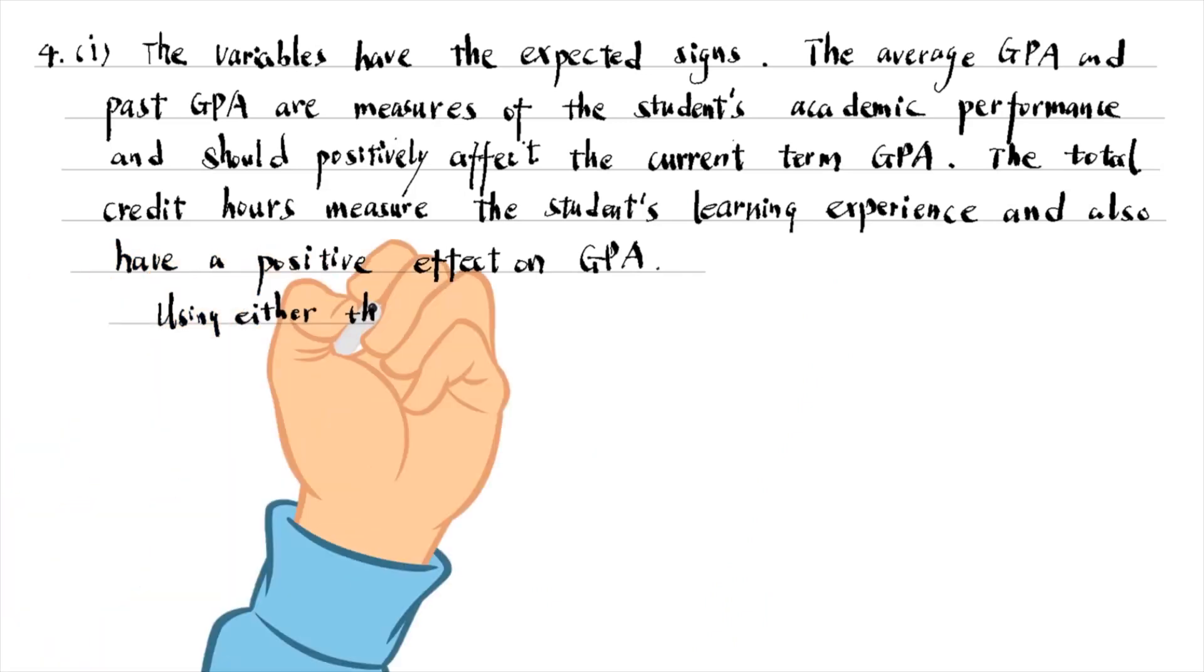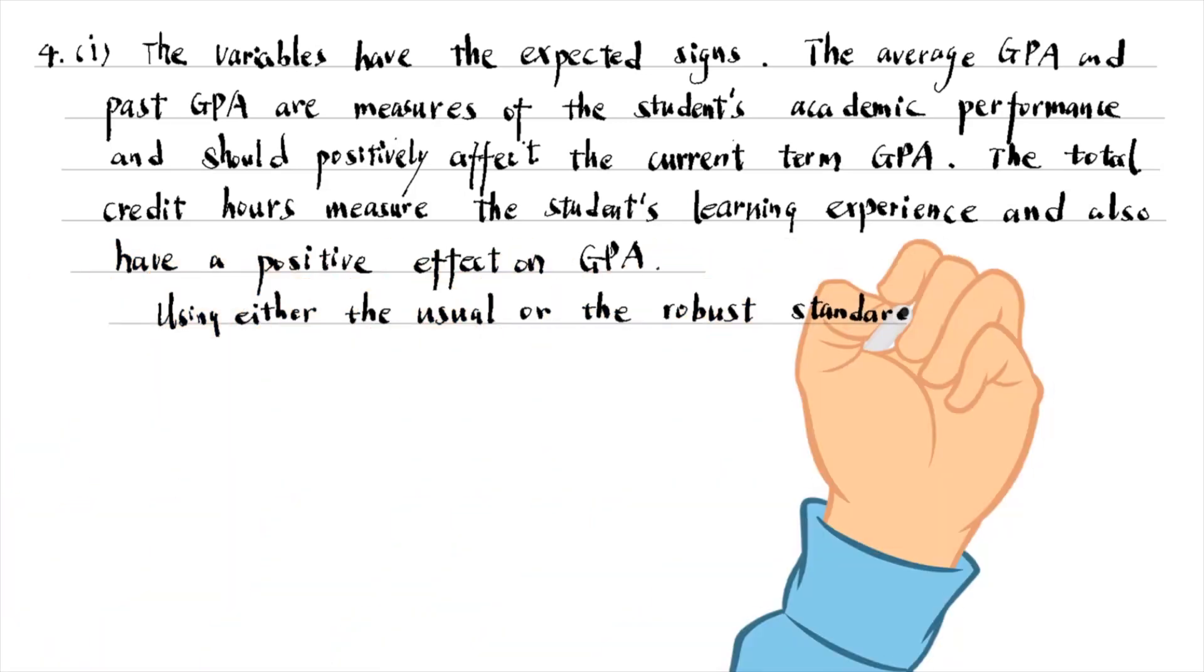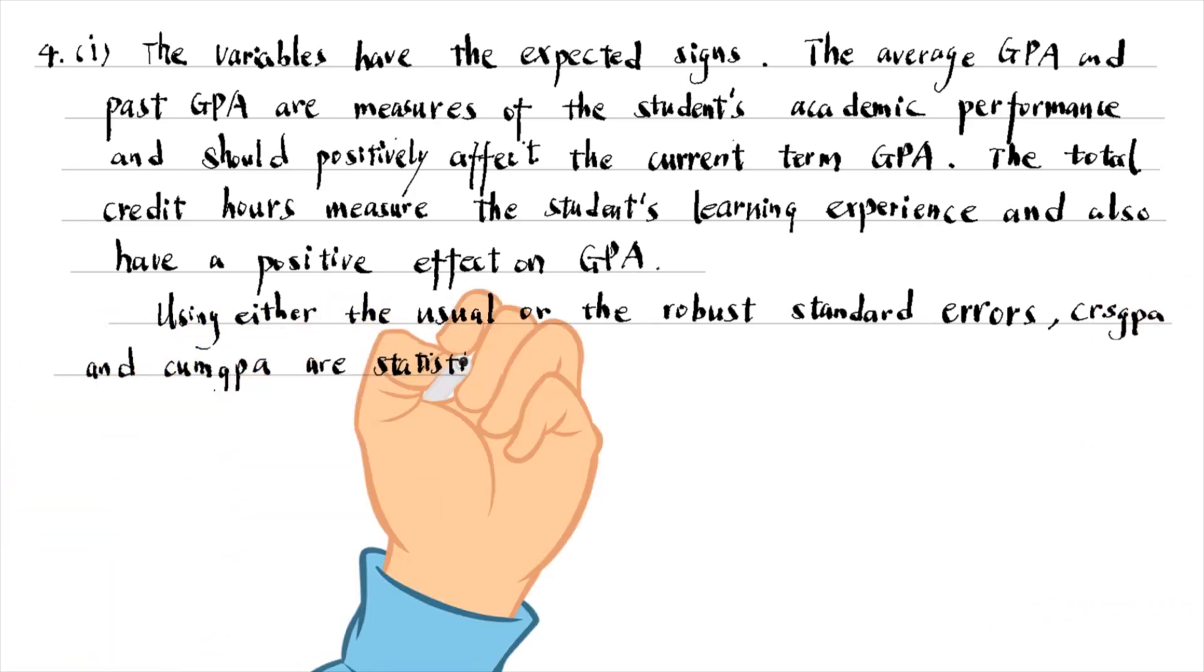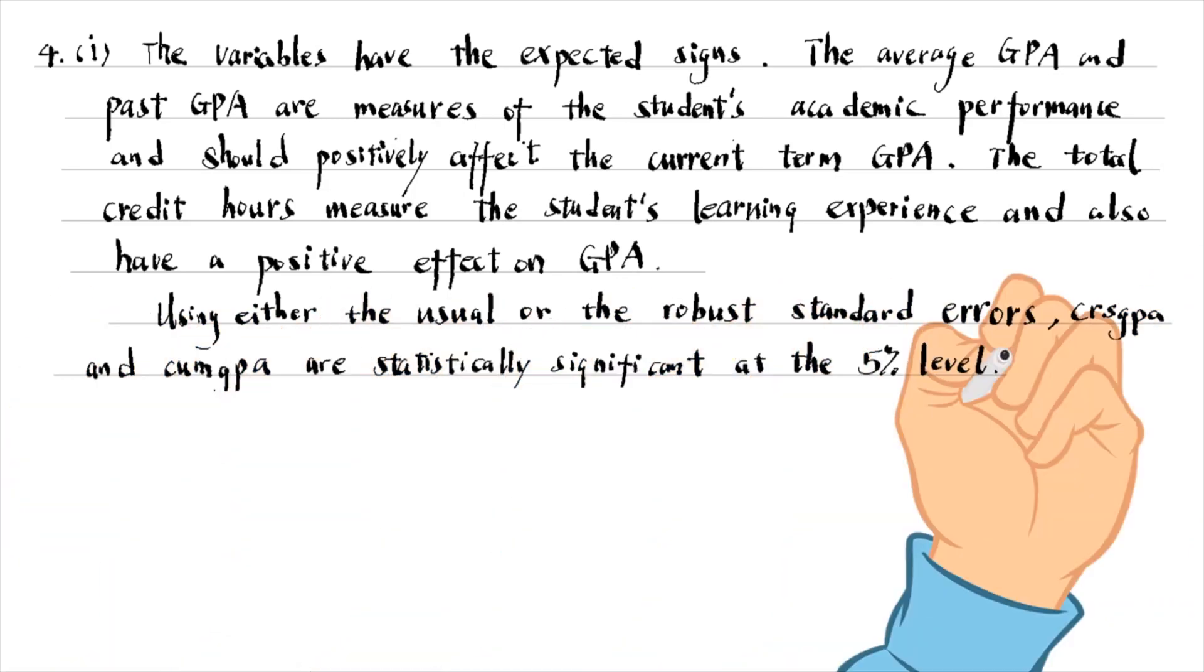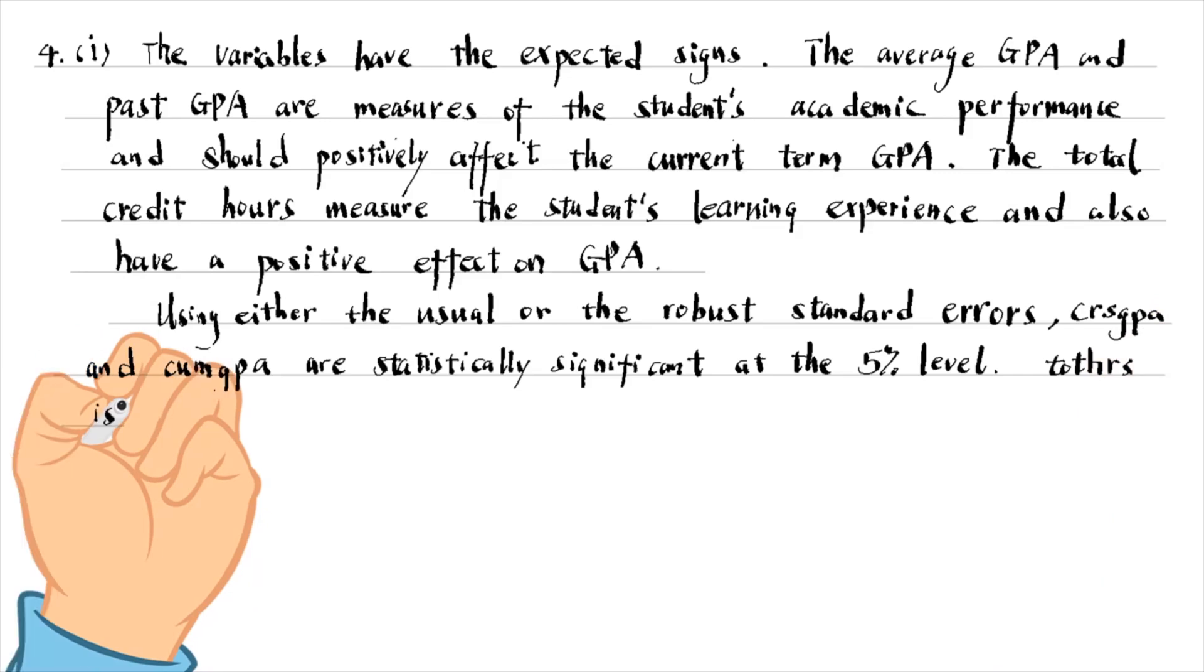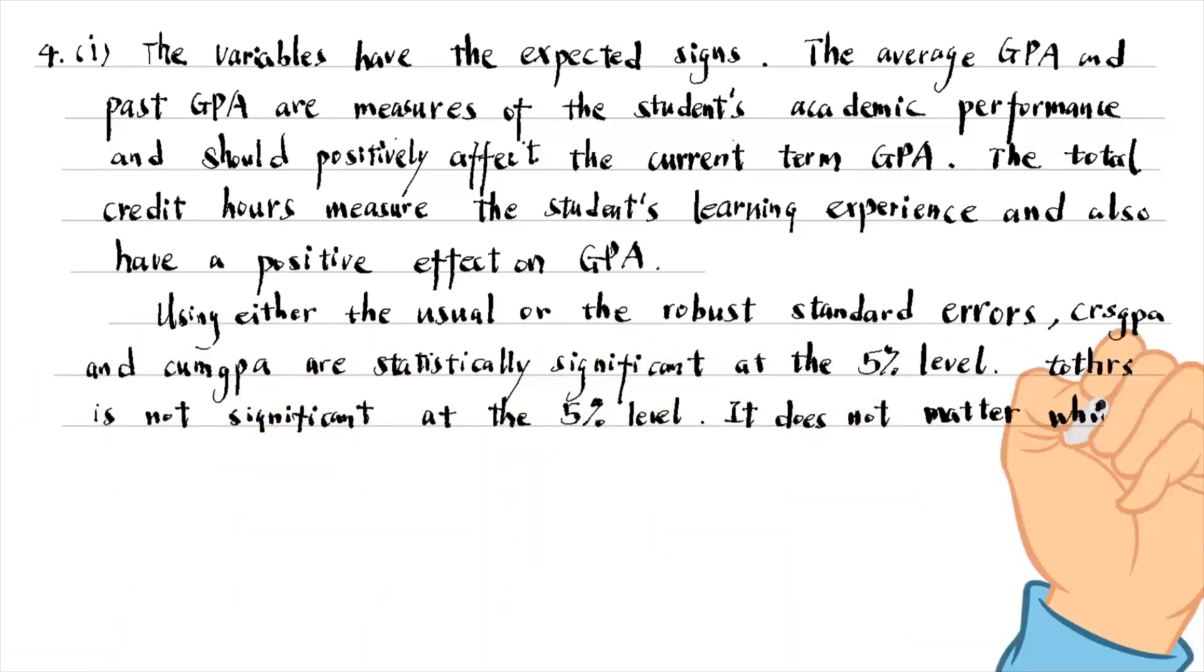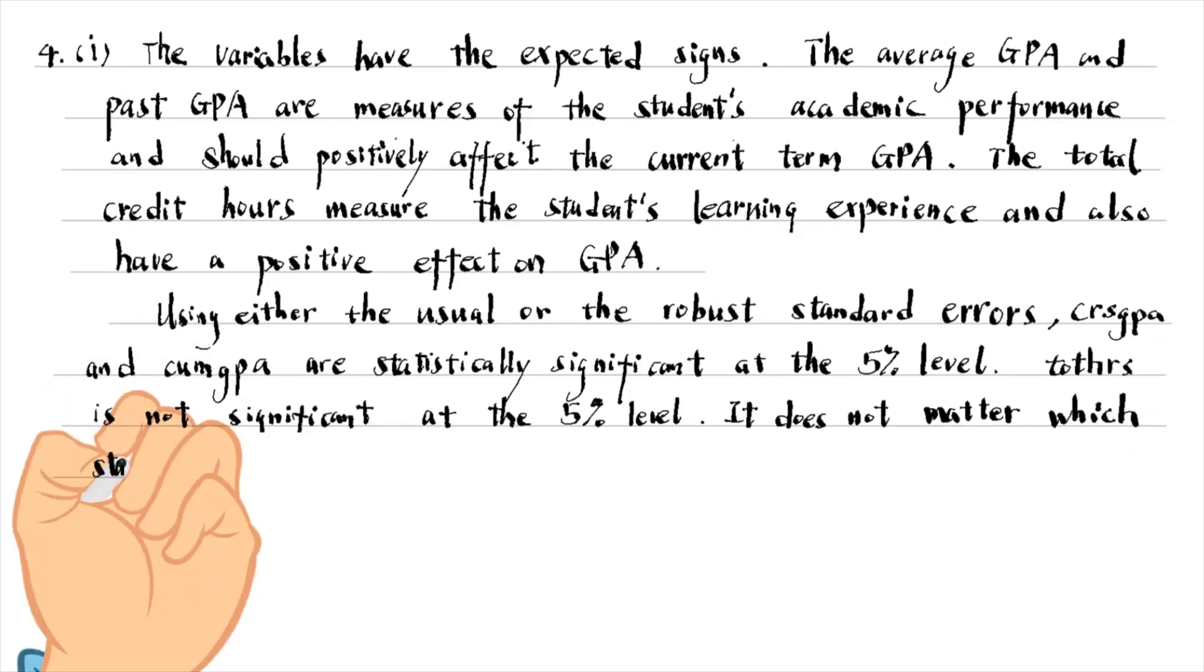The total credit hours measure the student's learning experience and also have a positive effect on GPA. Using either the usual standard errors or the heteroscedasticity robust standard errors, the average GPA and the past GPA are statistically significant at the 5% level. The total credit hours variable is not significant at the 5% level. It does not matter which standard errors are used.